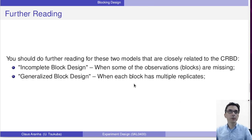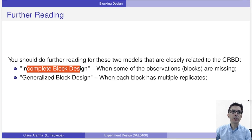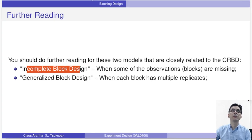Now, you should do further reading for these two models that are closely related to the CRBD. For instance, the incomplete block design is what we do when some of the observations, some of the blocks, are missing. In this case, it doesn't make a lot of sense for this algorithm example because you can run for everyone. But if you are using some blocks that you cannot make observations for all the treatments in all the blocks, you want to use an incomplete block design.